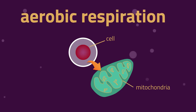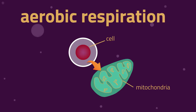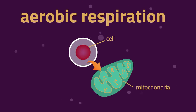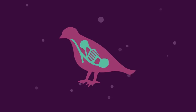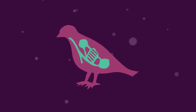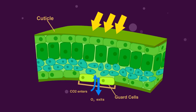Aerobic respiration happens all the time in all cells, usually in the mitochondria. Animals get the oxygen needed from the air through their ventilation systems. Plants get their oxygen from the air through the stomata.